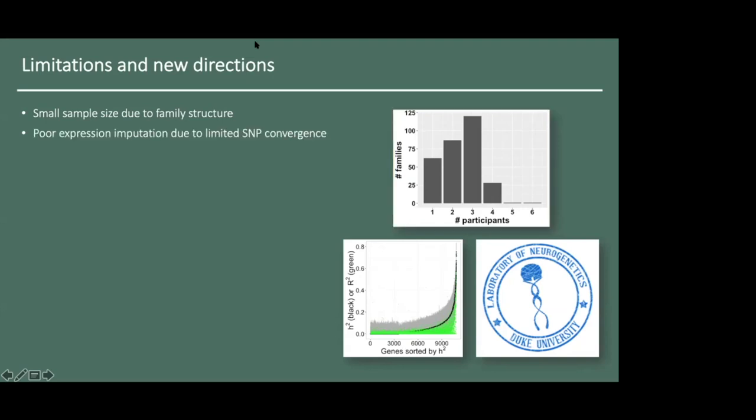Second, we ended up excluding additional genes based on poor convergence between SNPs included in the prediction model and SNPs captured by the genotyping platform used to analyze the HCP data. Although we were able to impute cortical expression of 88 depression-associated genes, we ultimately computed TPRS using the 36 genes in which the imputation pipeline performed the best. It's worth noting here that we never expected to impute expression of all 566 depression-associated genes, because PrediXcan works best for genes whose expression is highly genetically regulated, which is certainly not always the case.